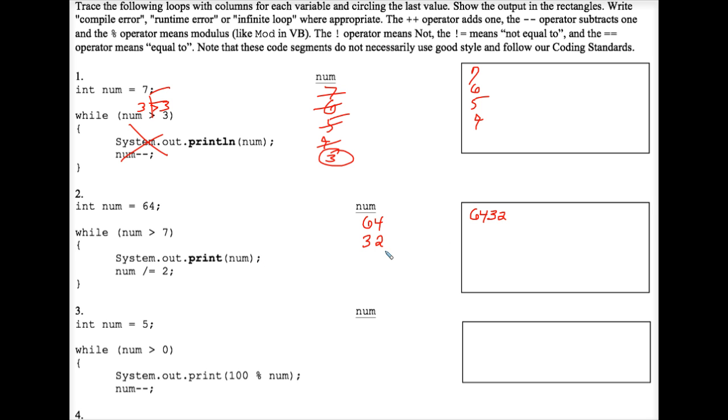And then we divide by 2 down to 16. 16 is greater than 7, so we print a 16. Add it to that all. Concatenate it to it. It goes down to 8. 8 is greater than 7, so the 8 prints. And then, after the 8 prints, we divide it by 2, and num ends up being 4. And 4 is not greater than 7, so we are finished.